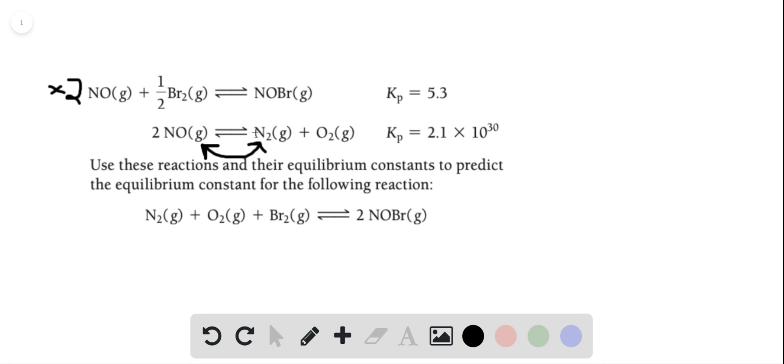Then we'll have two NO in the products, and that'll cancel out with the two NOs over here. That leaves us with N2, O2 from this side, Br from this side, and two NOBrs on this side. So by multiplying this top equation by two and flipping this bottom equation, we get the final equation.